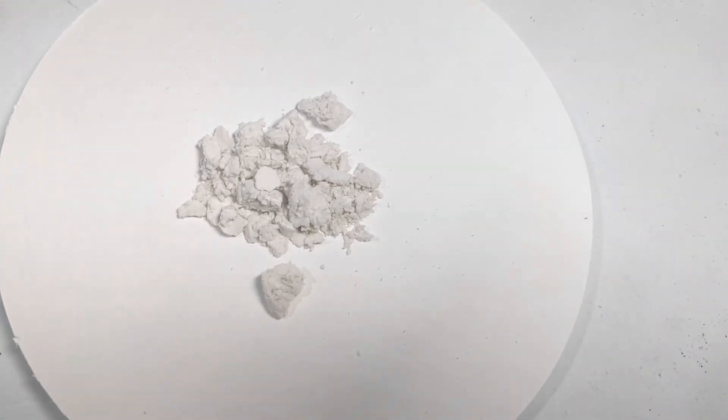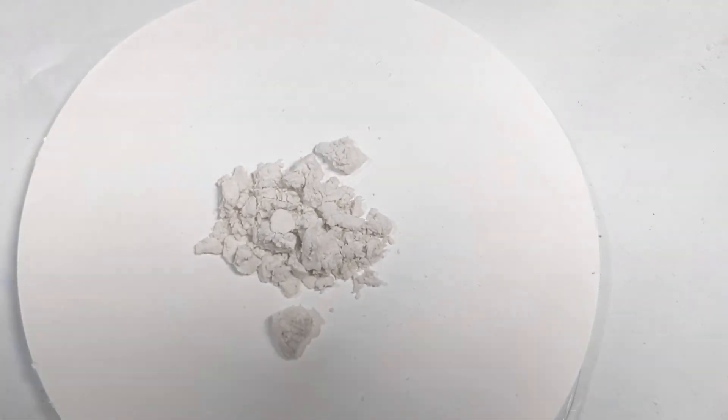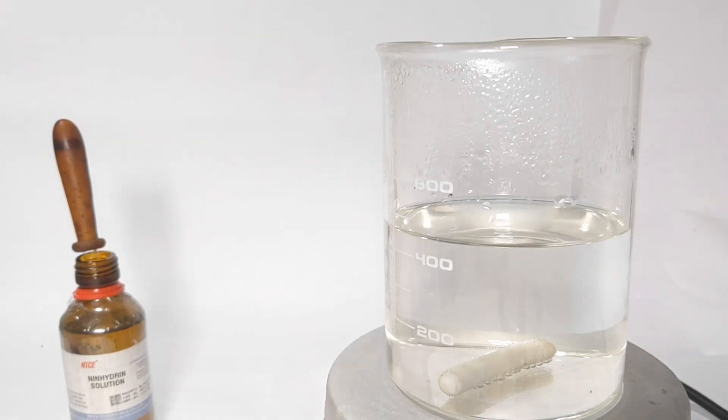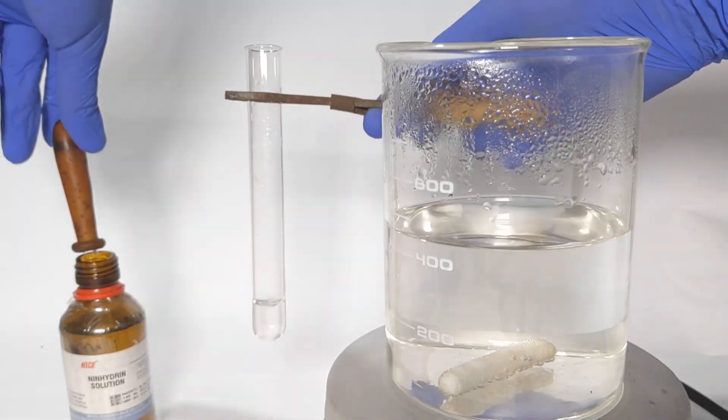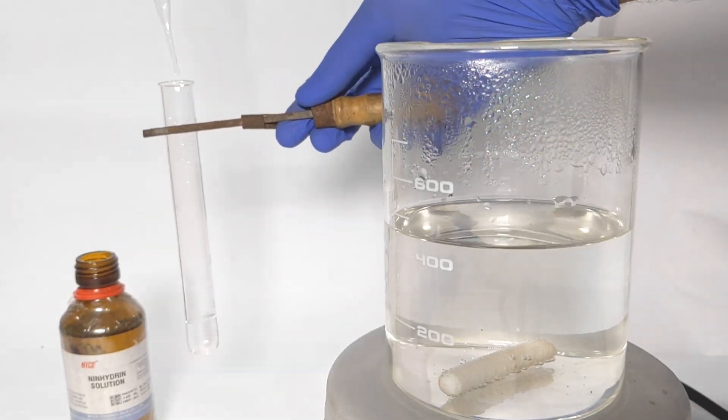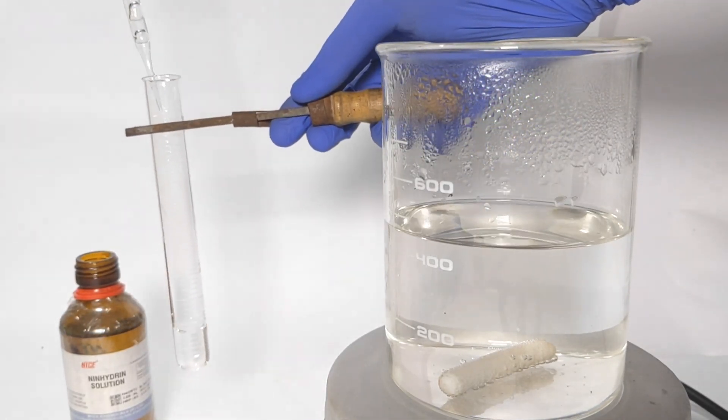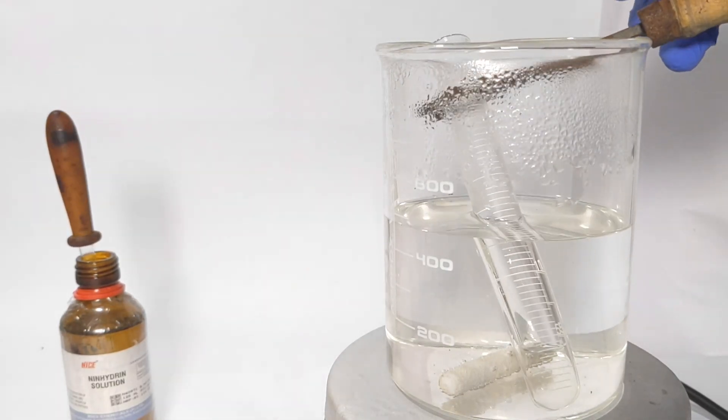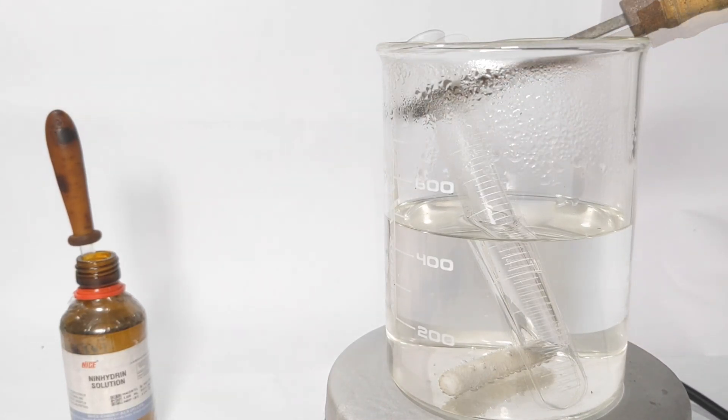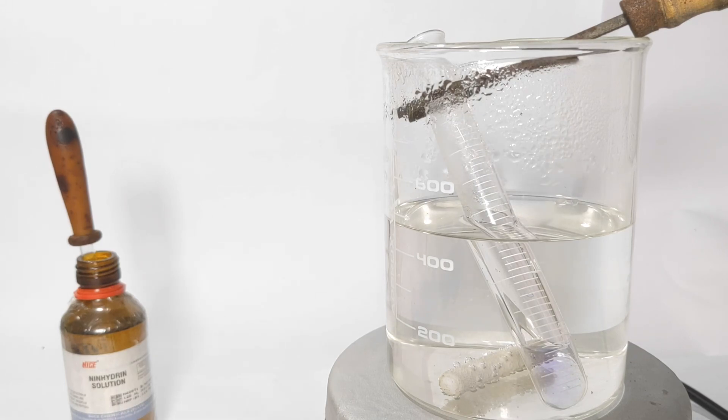I then did the ninhydrin test to confirm the presence of alpha amino acids. To a 2 percent solution of glycine, a few drops of ninhydrin reagent was added and the test tube was placed in a hot boiling water bath for a few minutes. A purple color was obtained which confirms the presence of alpha amino acid glycine.